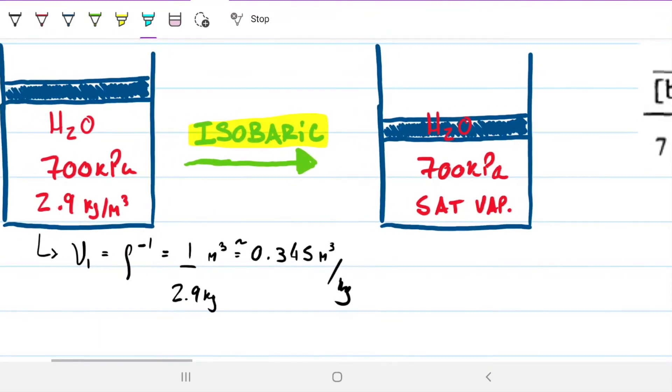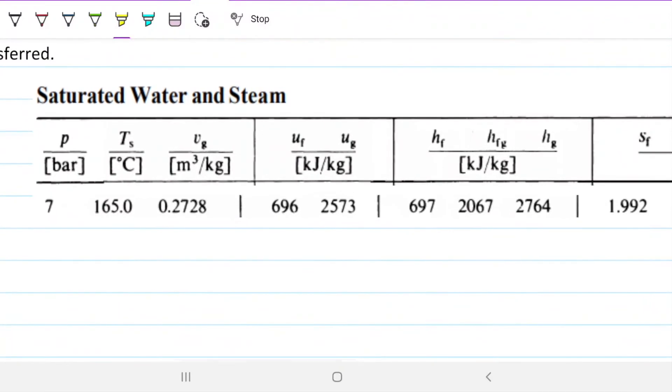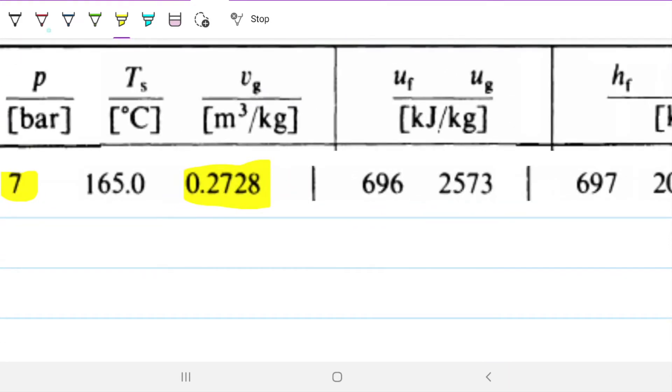On the first one, I'm going to look at the saturated table. I'm going to look at the pressure at 700 and see whether this value falls between the liquid and vapor one. If so, we know it's a mixture. If it's greater than the vapor one, we know it's a superheated fluid. Here I am on the saturated water steam table, looking at 7 bar, same as 700 kilopascals. The specific volume here is 0.2728. We know that our specific volume is 0.345, greater than the specific volume of the gas if it were a saturated mixture.